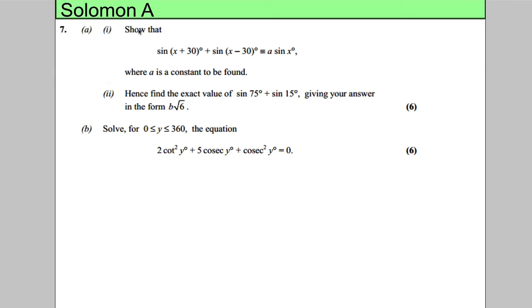Okay, in this question for the first part, we're asked to show the following is true: sine x add 30 degrees plus sine x subtract 30 degrees is a sine x, where a is some constant to be found. This is quite straightforward.